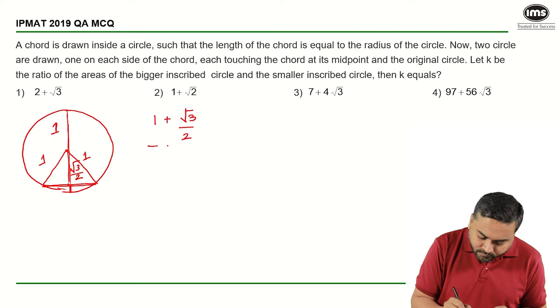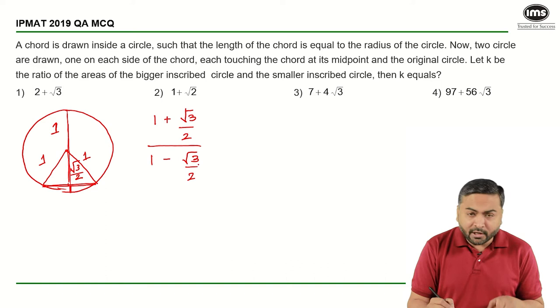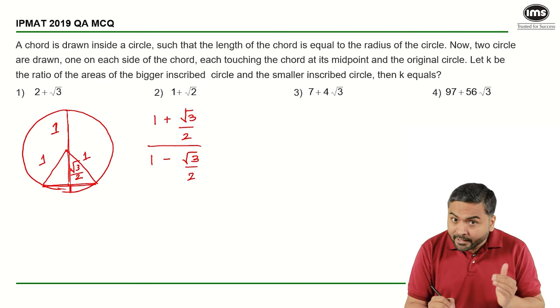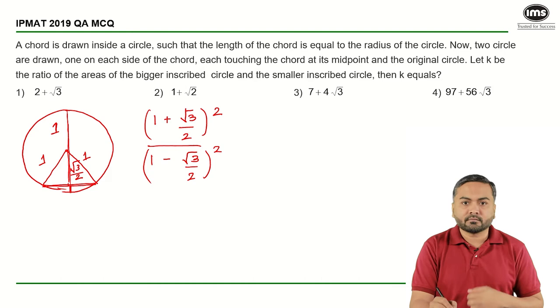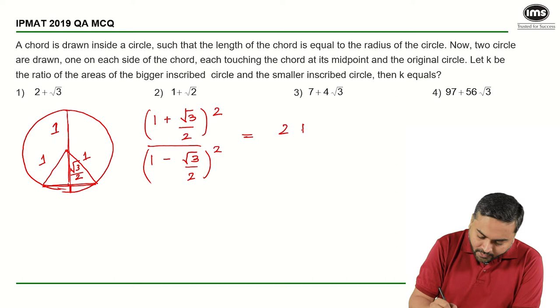This is the ratio of the two diameters. I can say that this is the ratio of the two radius as well and if I want to find out the ratio of the areas I will say it is square of the ratio of the radiuses. If I can simplify this I will say that this is 2 plus root 3 the whole square upon I have 2 minus root 3 the whole square.